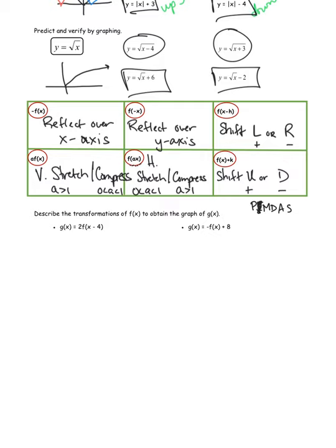Looking at this function, I see parentheses and inside is x minus 4, so the first thing is a shift. Since it's with the x, it's in the x-direction, and x's are backwards — so where you might think left, it's actually right. This graph gets shifted to the right 4. Then there's a 2 in front of f(x) — that's a vertical thing, and since that number is bigger than 1, it's a vertical stretch by 2.